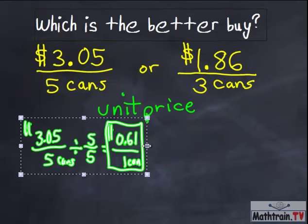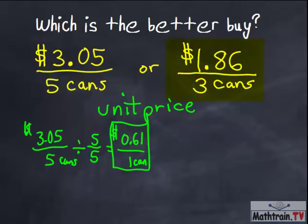Now the other one, it's $1.86 per three cans. So to find out how much it costs per one can, I'll divide top and bottom by three over three.